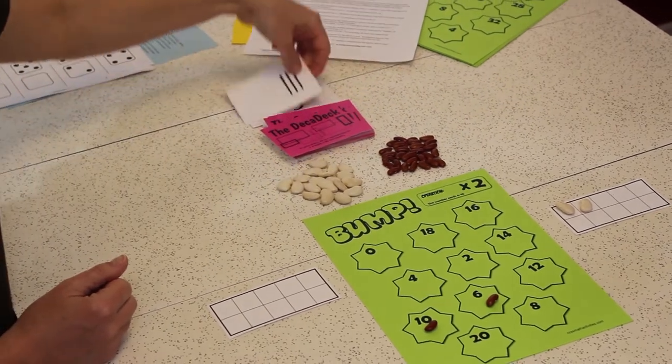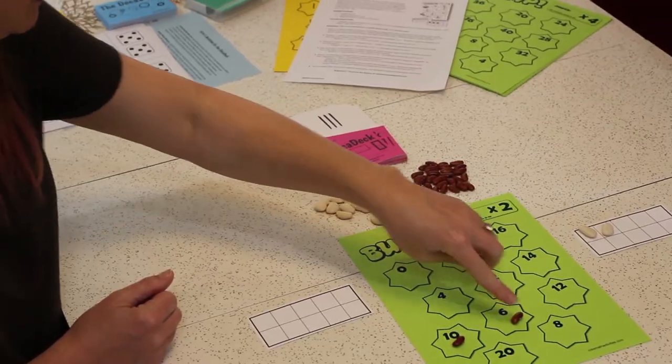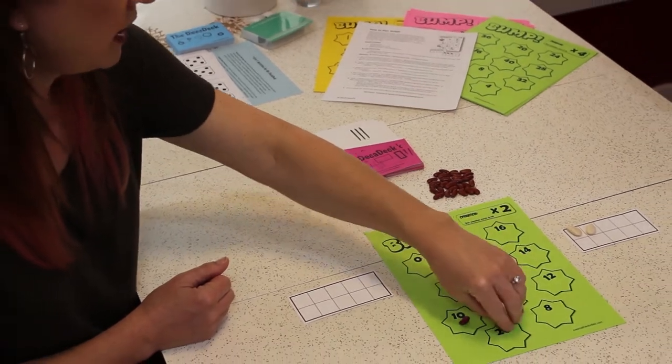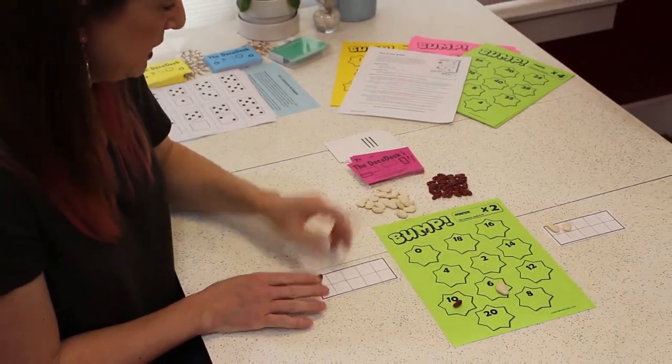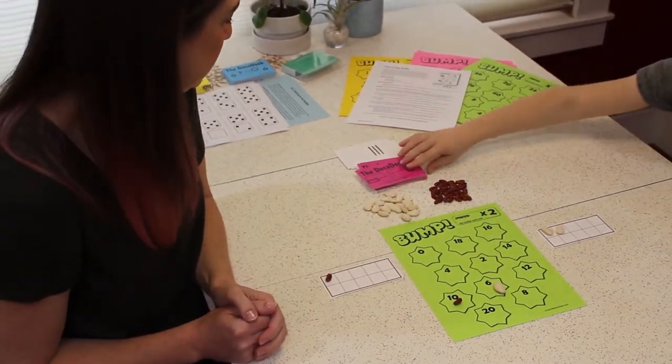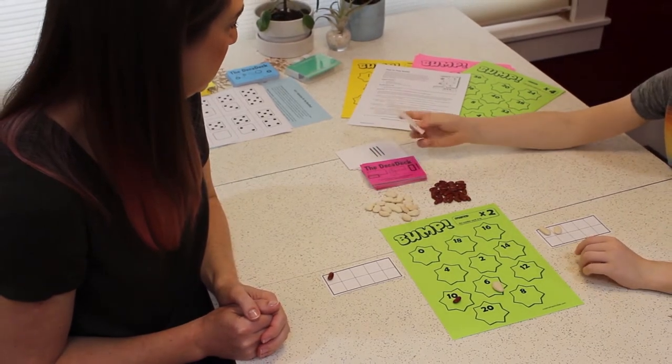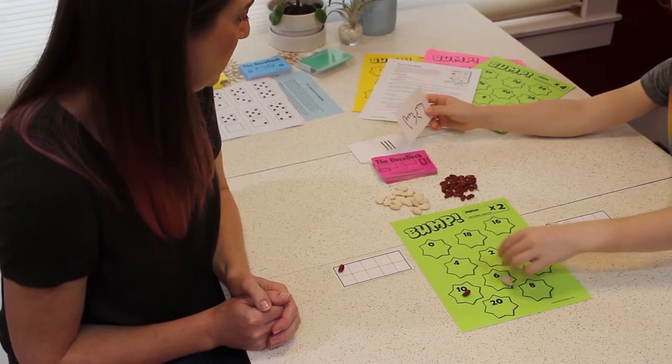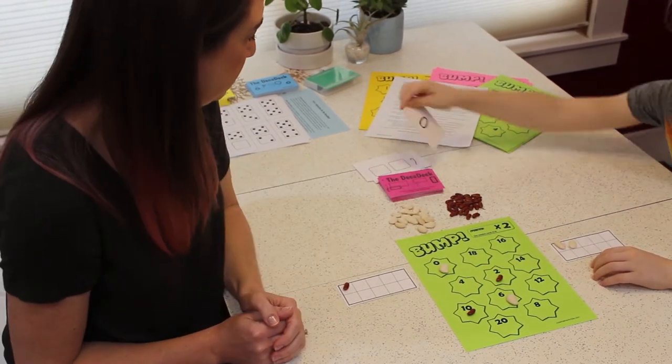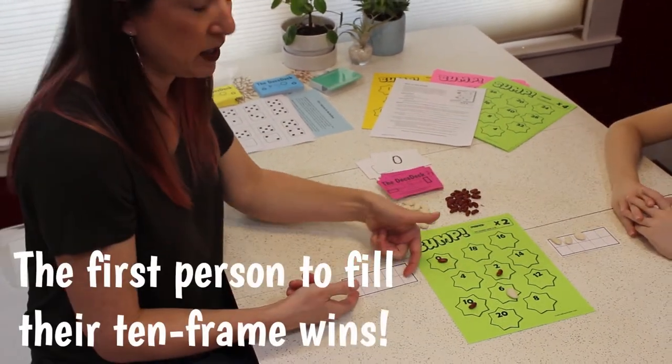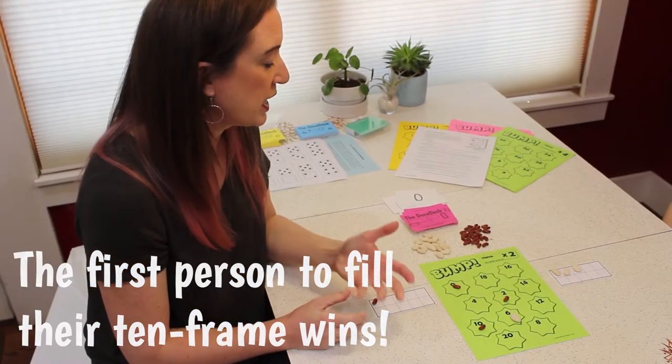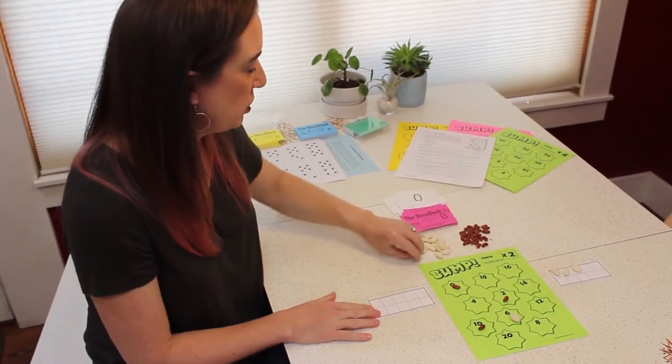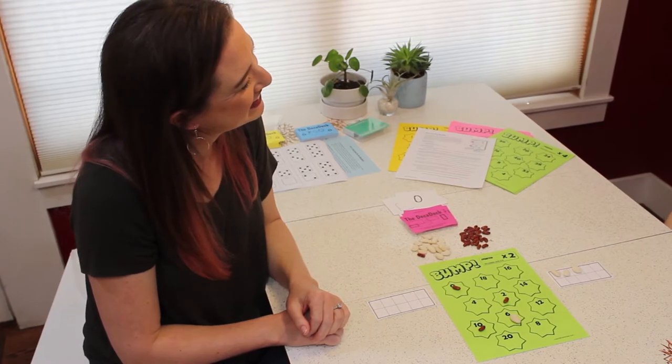All right. My turn. 3. 3 times 2 is 6. Lucky me. Henry has a bean on the 6. I get to bump him off. And that bean becomes my point. Henry? Okay. Ooh, it's a 1. 1 times 2 is 2. Play using this fashion until somebody fills up their card of 10. There's lots of different variations of Bump. I'll show you those in a minute. But thank you for playing with me, Henry. You're welcome.